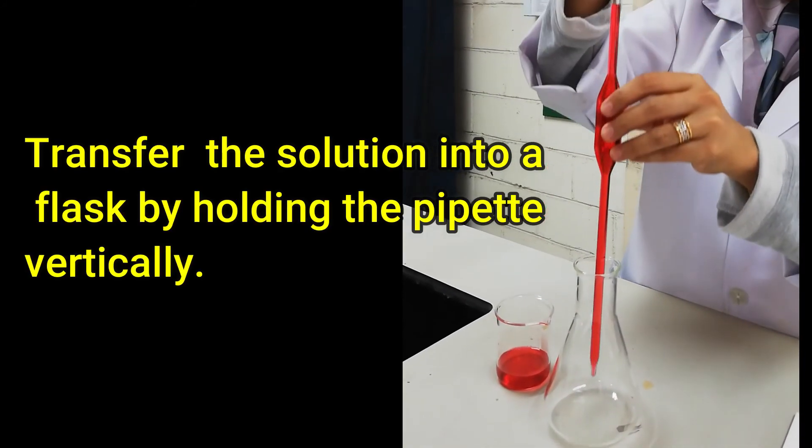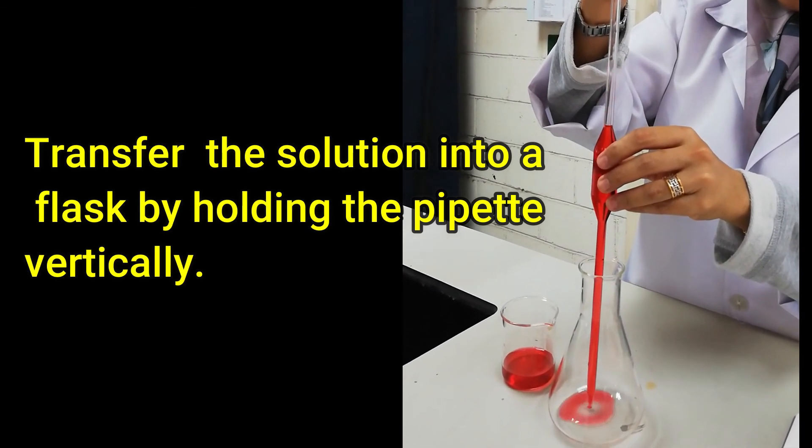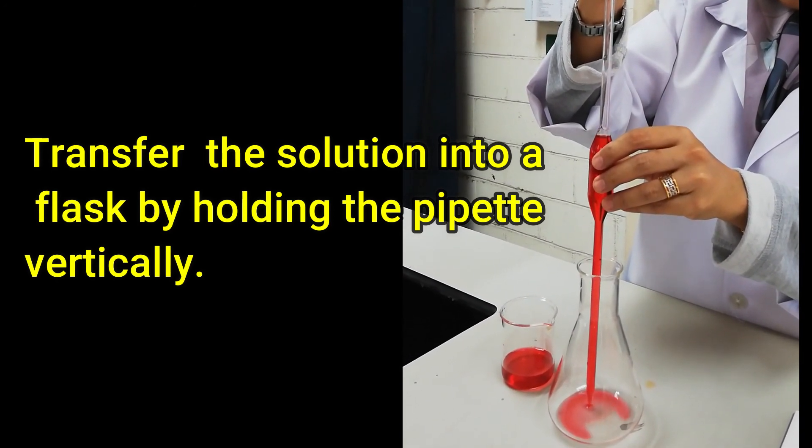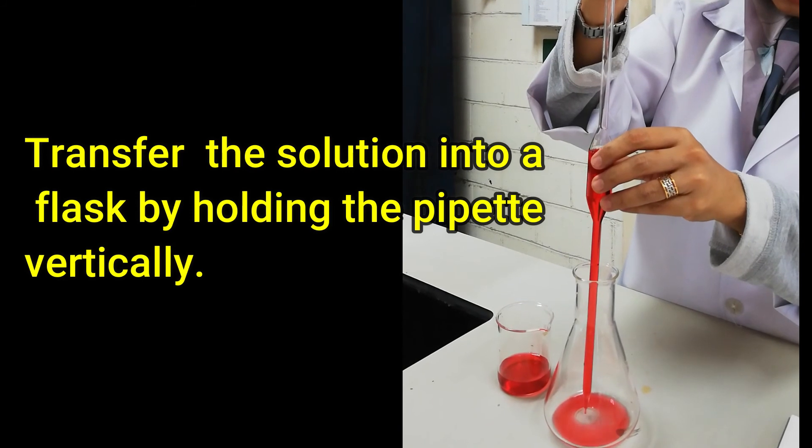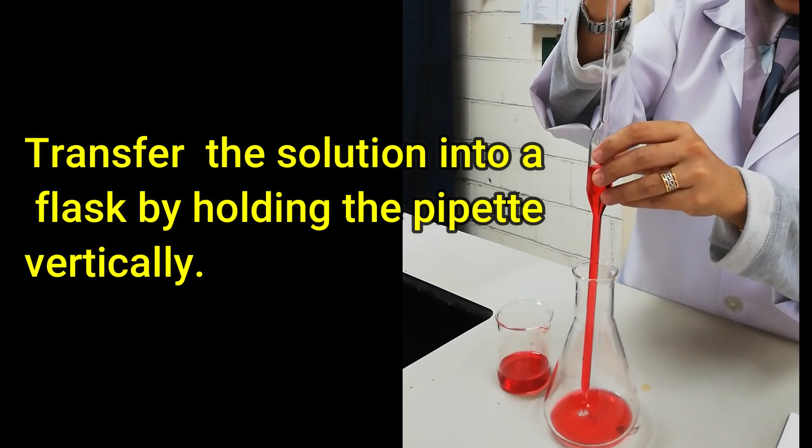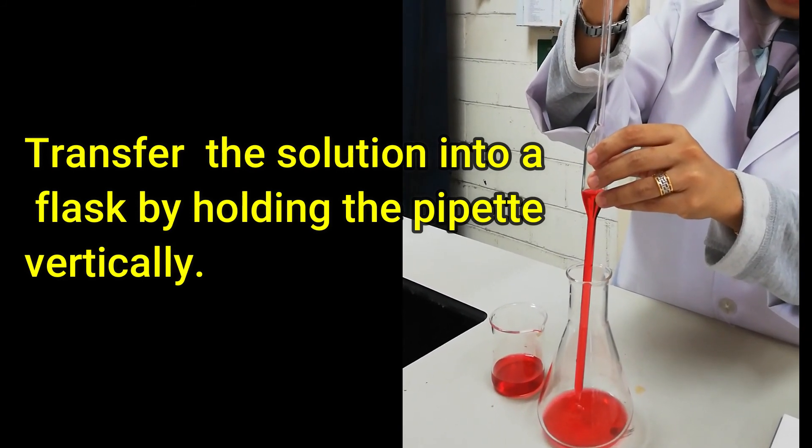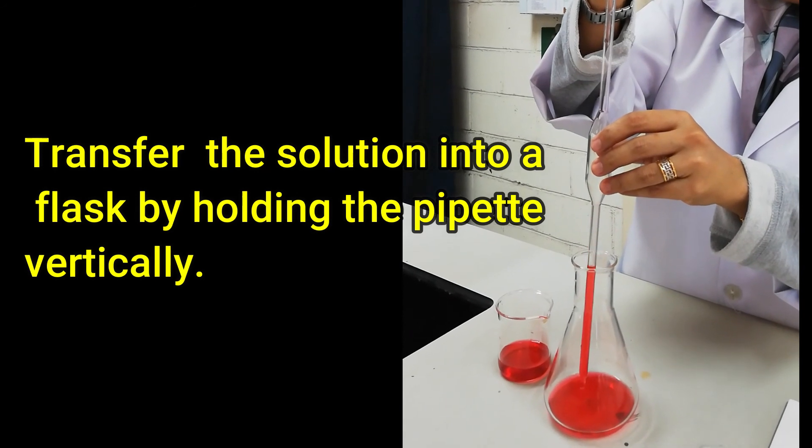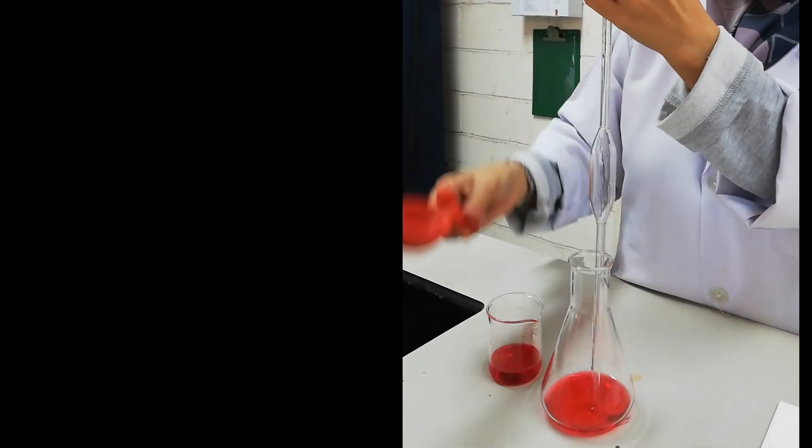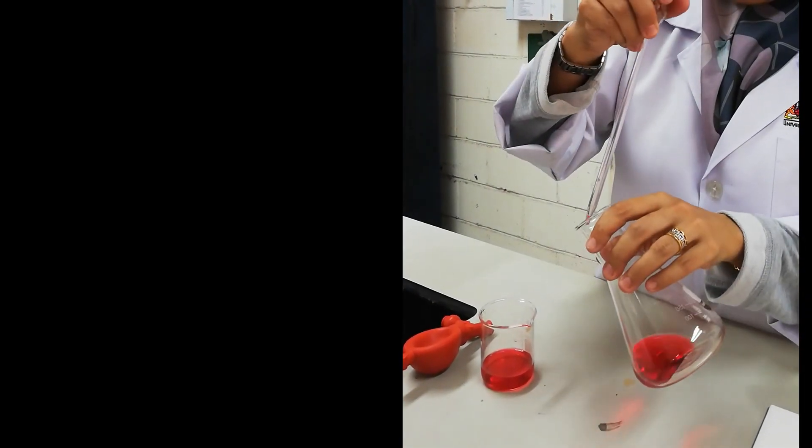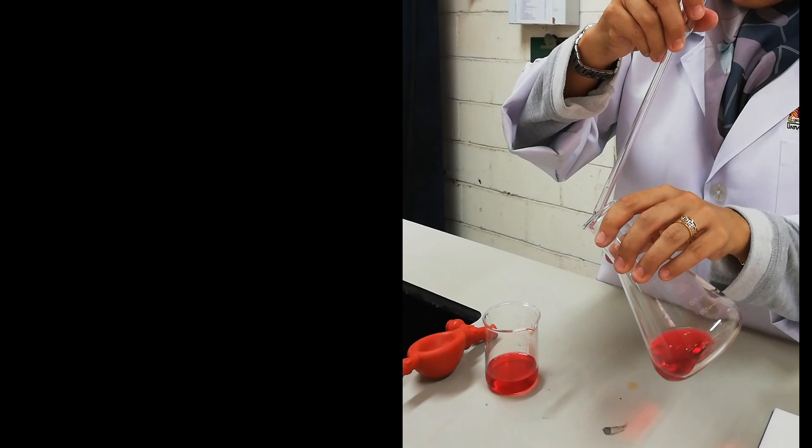Transfer the solution into a receiving flask by holding the pipette vertically and allow the solution to drain. There will be a very small amount of solution that will be left. Do not force this liquid out. Touch the tip of the pipette to the side of the flask to allow the solution to drain.